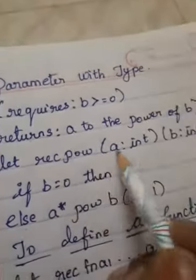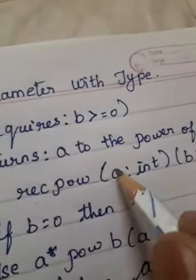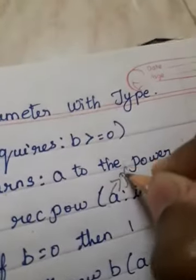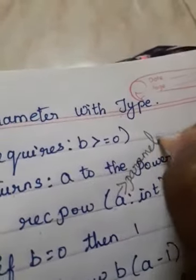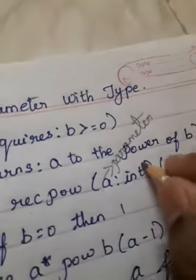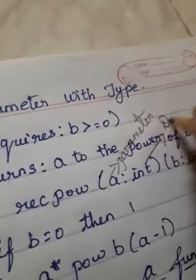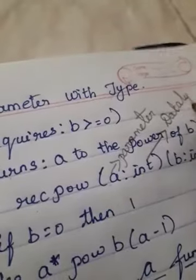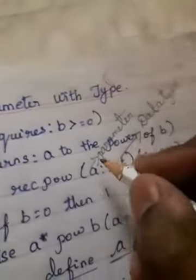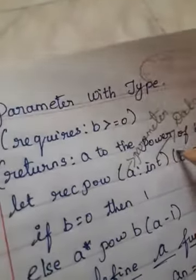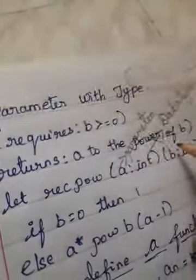We have 'pow a colon int'. Here, 'a' is the parameter — a variable we call a parameter. 'int' is the data type. So this is the concept of parameter with data type. Similarly, 'b' is also a parameter and 'int' is its data type.